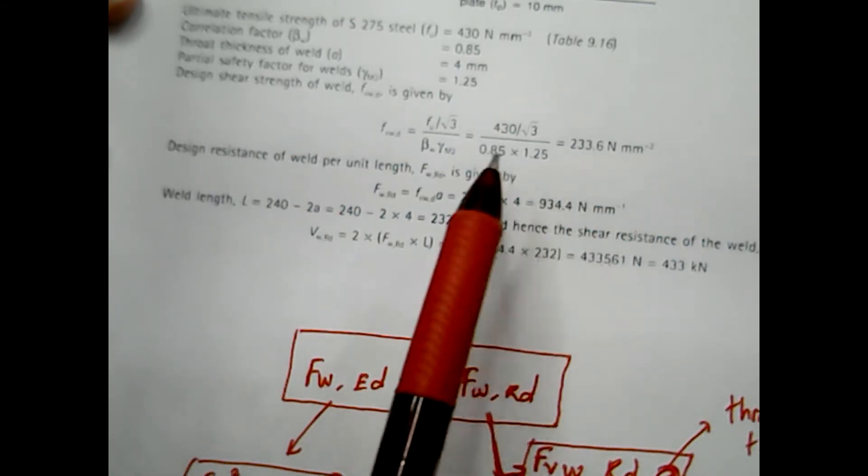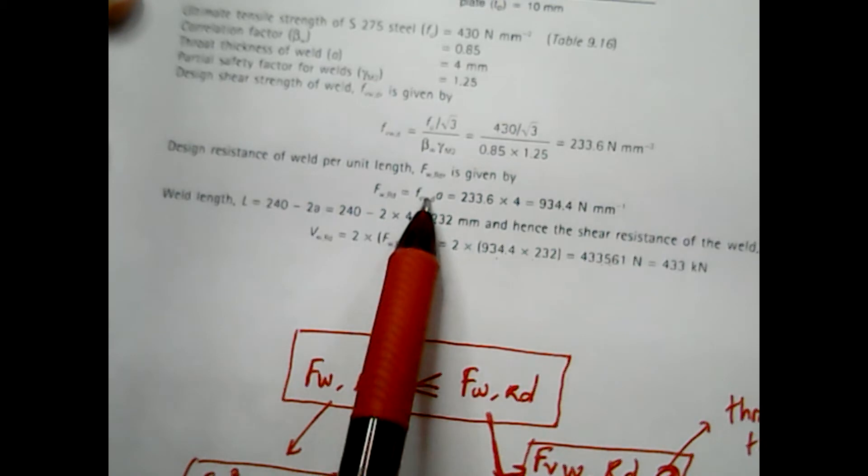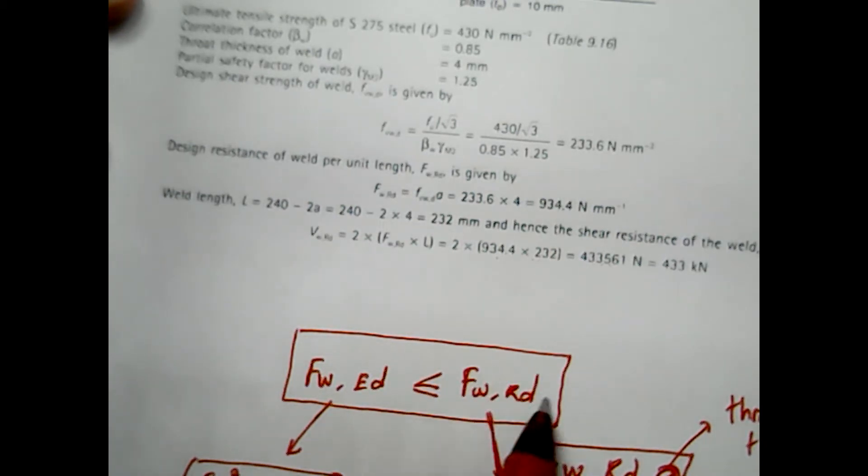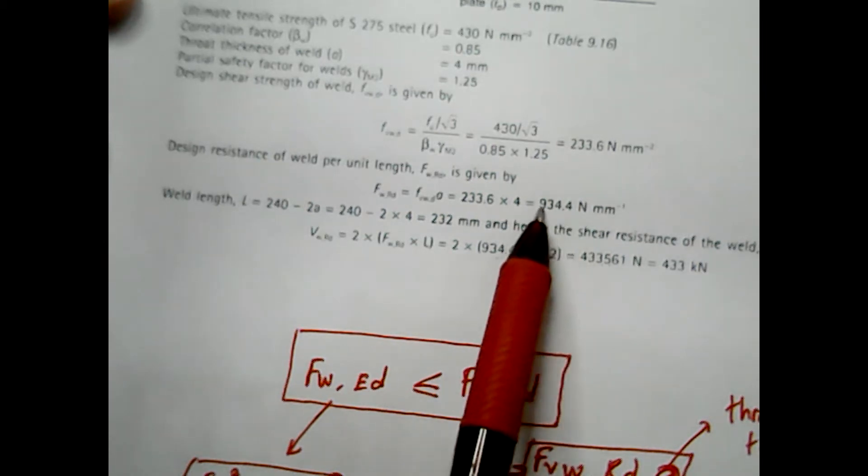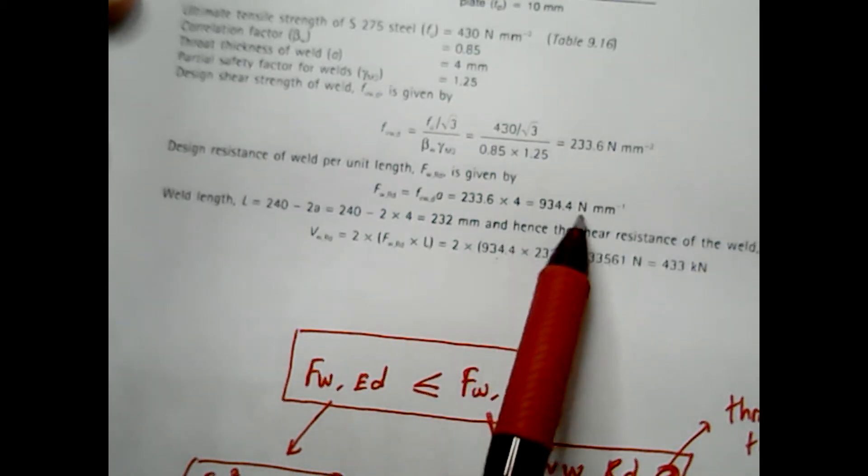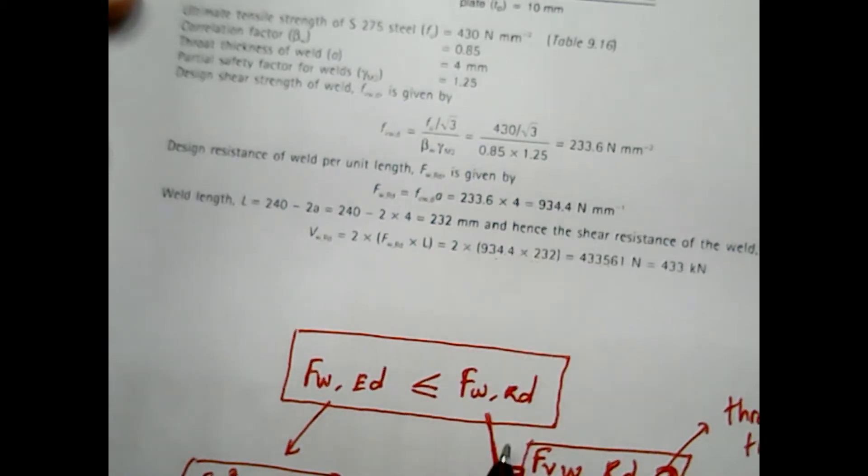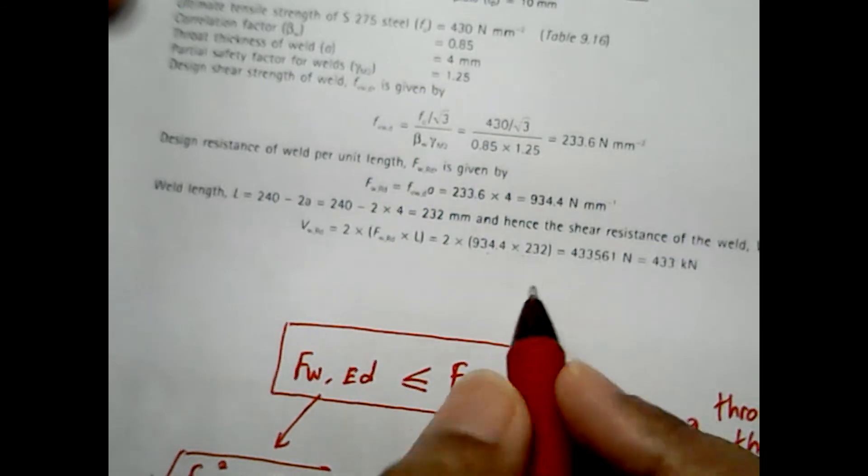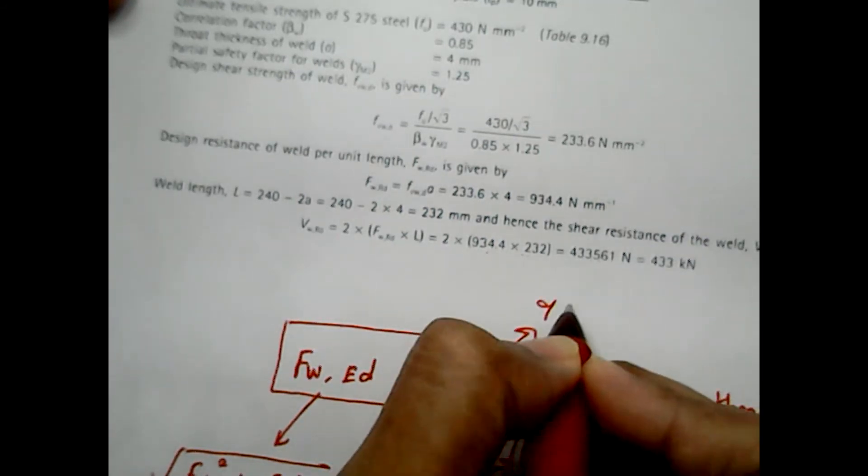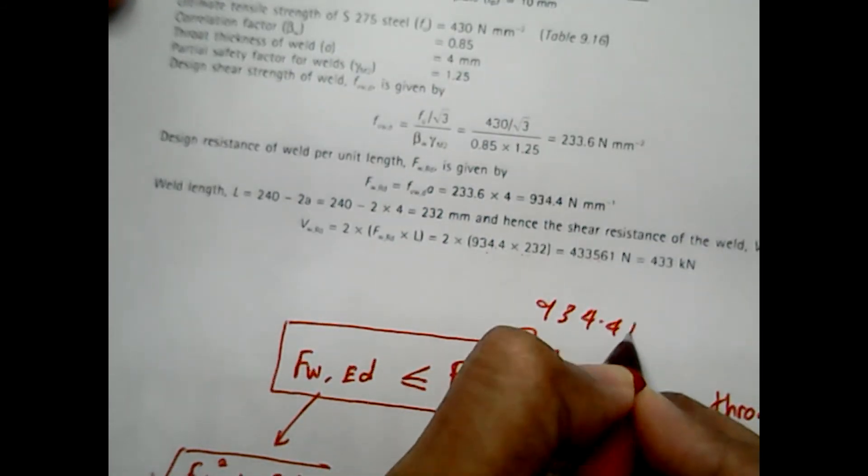233.6 times the throat thickness to get Fw,Rd which is design resistance of weld per unit length, which is 934.4. So the design resistance of weld per unit length is now 934.4 N/mm.